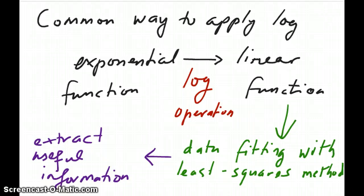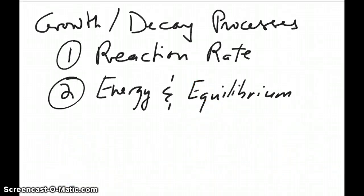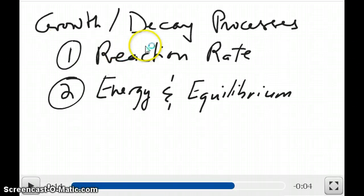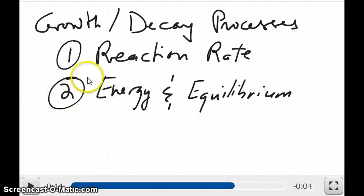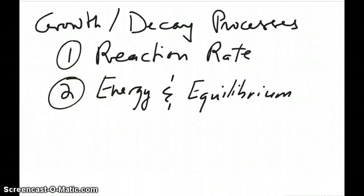You can fit the data with a method called the least squares method, and once you fit that data, you can then extract useful information that will give you an idea of what's going on in the system you're studying. There are many different systems that display exponential behavior. A couple that we're going to deal with in Chem 12 would be reaction rates, which is kinetics, and energy and equilibrium, which we'll discuss in the thermodynamics chapter. Both of these would require you to understand how to convert an exponential to a linear function.